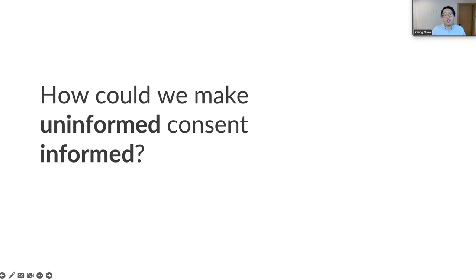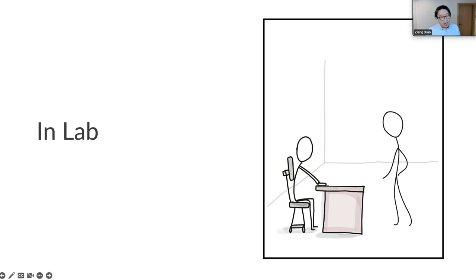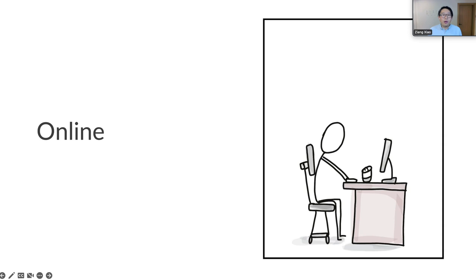So how can we make uninformed consent informed? In my undergrad, as a psychology major, I worked at labs and one of my jobs was to run experiments. To make sure participants make an informed participation decision, I often went through the consent form with the participant, answered their questions, made clarifications, and this kind of communication helps make the informed consent process more effective. I see this process as an initial interaction that builds trust and ultimately may benefit the study quality. But in an online setting, this interaction is often wiped off.